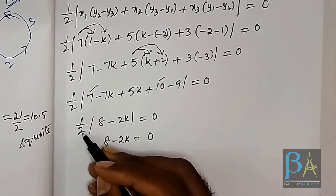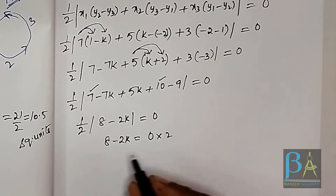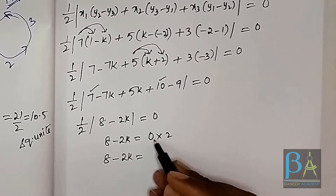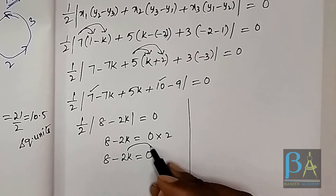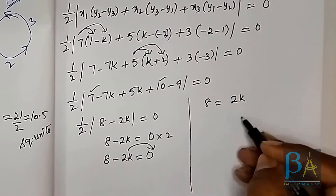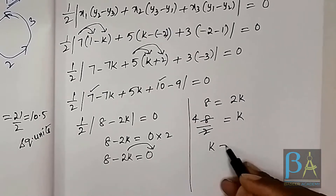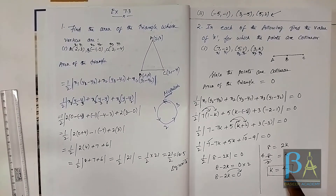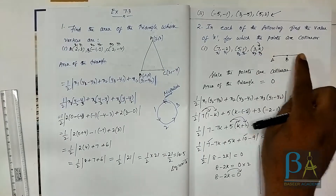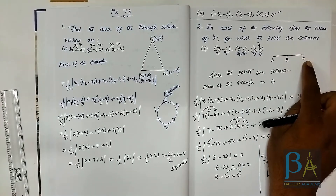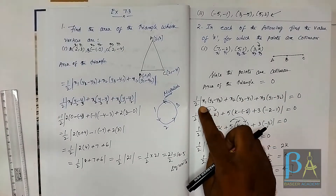Since half mod(8 - 2k) = 0, we get 8 - 2k = 0. Transposing: 2k = 8, so k = 4. The value of k is 4. He gave us three points with a missing coordinate k, and since the points are collinear, they lie on the same line, form no triangle, so area = 0, and we solve for k.